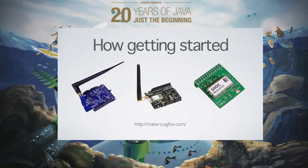Getting started is very simple. You need to be in an area with Sigfox coverage, then buy an Arduino shield or Raspberry Pi module — the first one costs about 75 euros. The shield comes with a subscription that allows you to use Sigfox for one year. There's a recommended website — the official Sigfox website isn't very friendly, but this particular page gives a nice overview of how to get started and which modules you can buy.